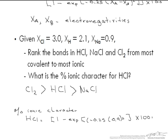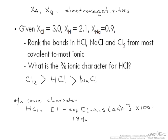For NaCl, it's going to equal 1 minus the exponential of negative 0.25 times 2.1 squared times 100, and that's going to equal 67% ionic.